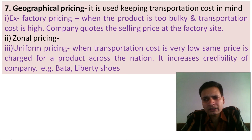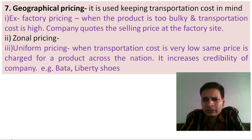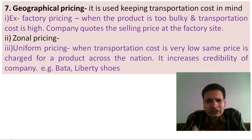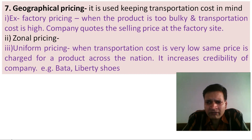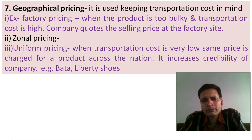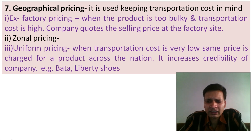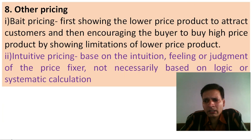Another method is zonal pricing, where different prices are quoted for different zones such as north, south, and east. Then there is uniform pricing, used when transportation costs are insignificant, and the same price is charged across the nation. This develops credibility and trust among buyers. FMCG products such as wristwatches and shoes are sold at a uniform price nationwide.